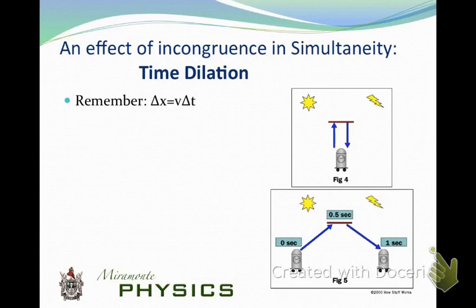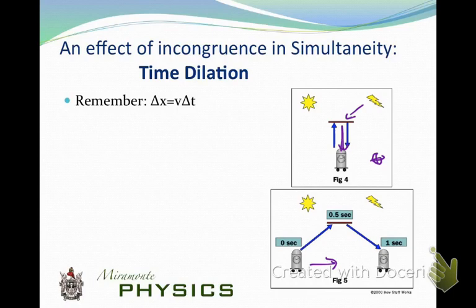Remember that Δx = v·Δt — distance is velocity times time. Now we're going to be talking about two different light clocks. One on the bottom is moving from left to right, and the one here is standing still. They're going to send a little pulse of light that goes up to the top and then come back down again. Two different scenarios: one standing still and one moving.